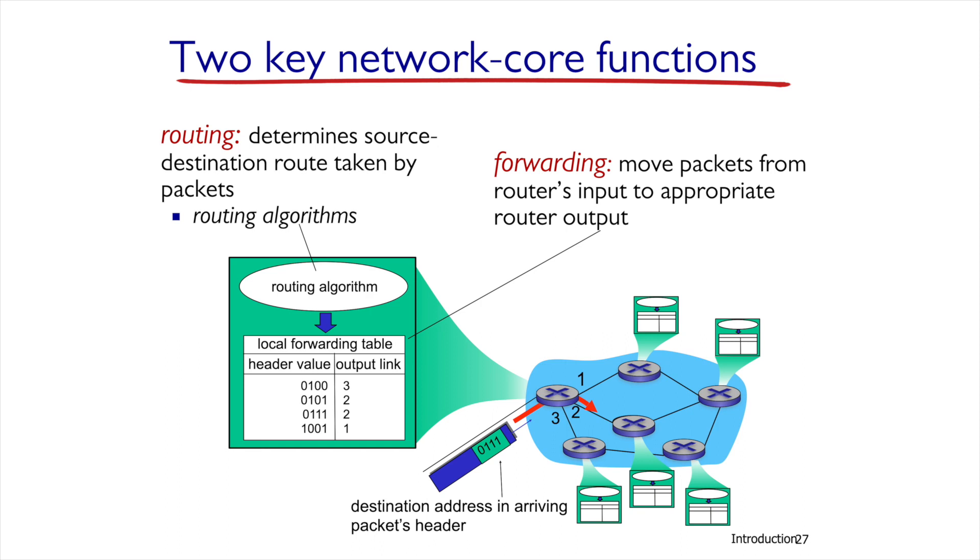Every router has a table, called a routing table, which contains all the information a router needs in order to decide which line to export the message to. At a later stage in the course, we'll learn about how these routing tables are constructed and how a router learns them.